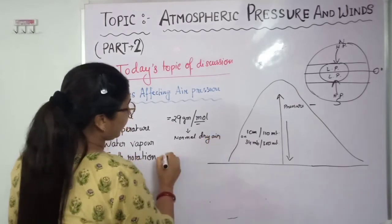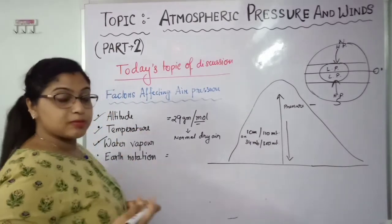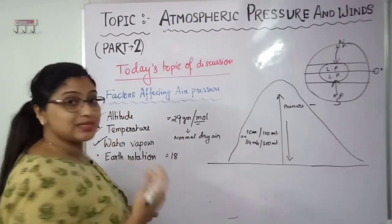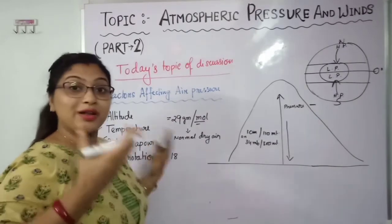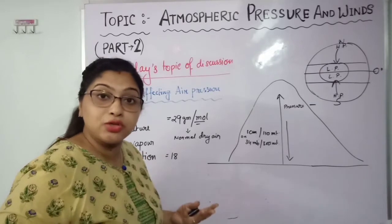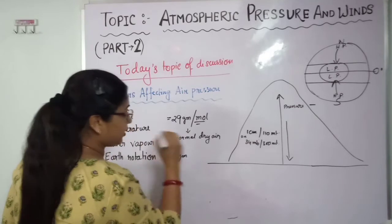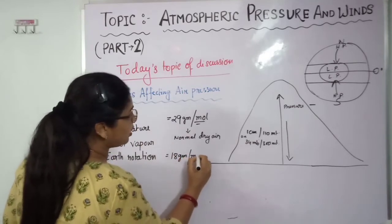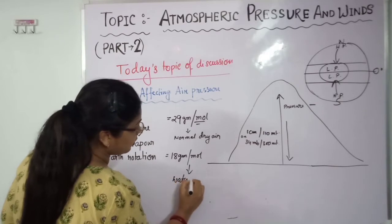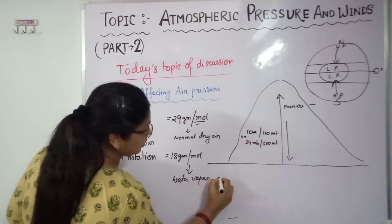But when water vapor is added to this air, then it becomes lighter weighted. Then we can see the air pressure is decreasing. Water vapor means more temperature. That's why it has more capability to absorb water vapor. So in that case, it becomes lighter weighted - 18 grams per mole when water vapor is present in air.